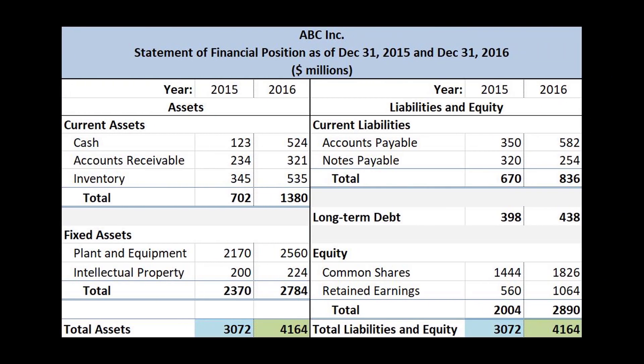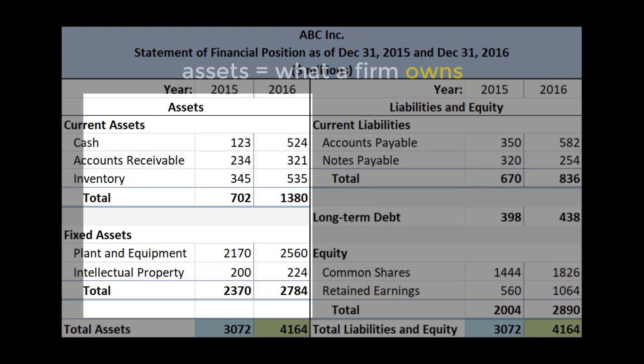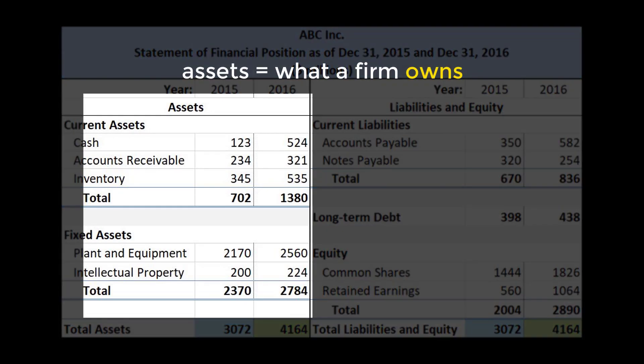The statement of financial position depicts a firm's assets on the left-hand side and liabilities and equity on the right-hand side. Let's examine each in greater detail. Assets are what a firm owns. There are two kinds: current and fixed.